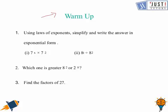This is 7 to the power x — this is multiplication — then 7 to the power 2. As you can see, the base is 7 and if it is multiplication, you need to add the powers. Here, the base is 8 and it's division in between, which means we need to subtract the powers.